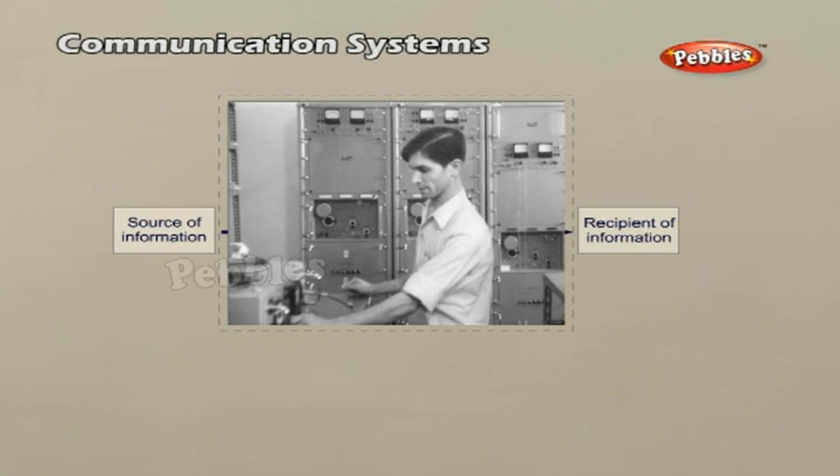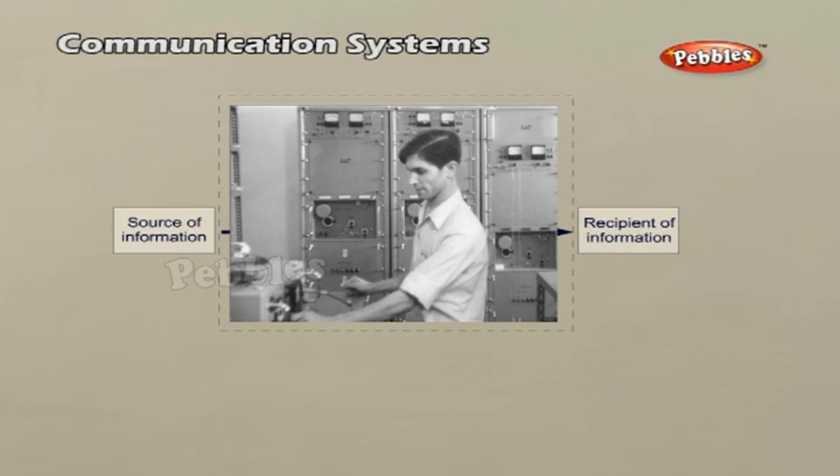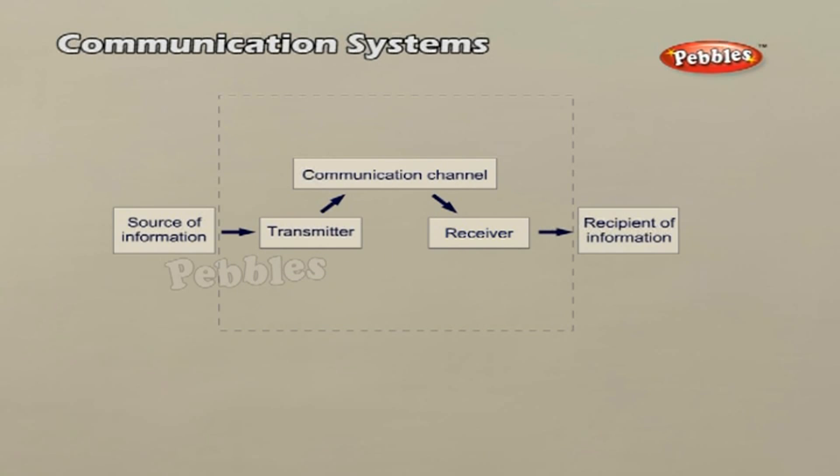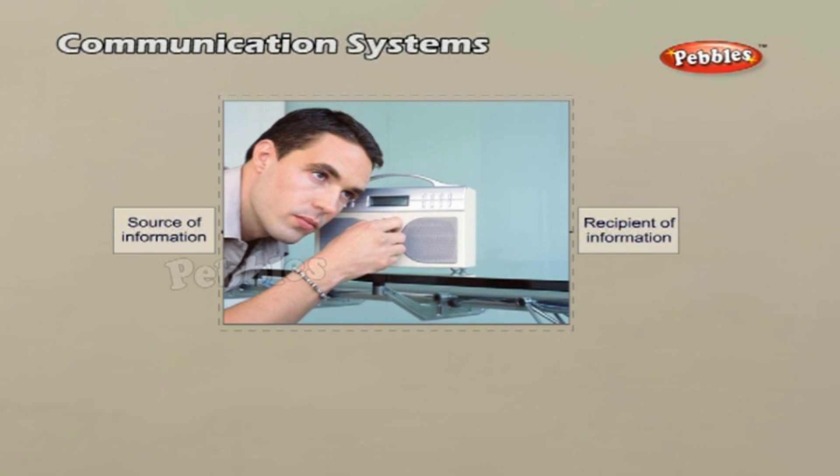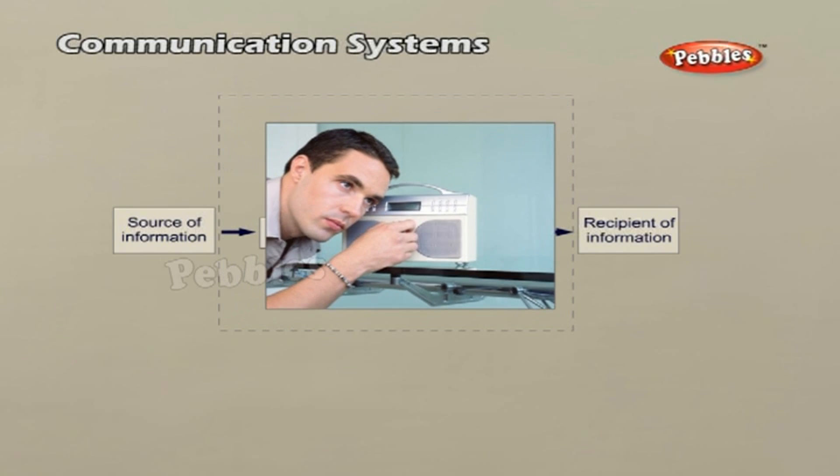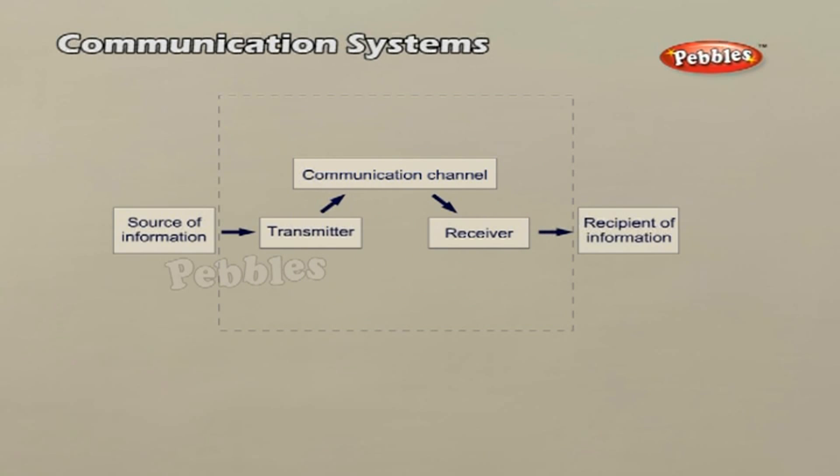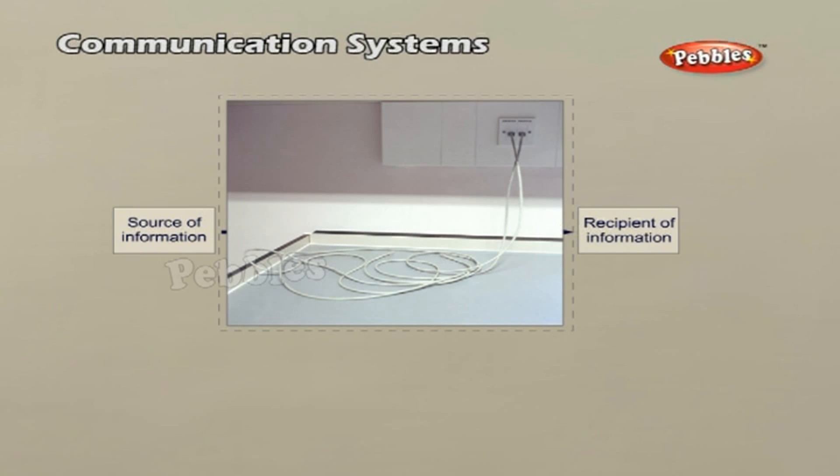The purpose of the transmitter is to convert the message signal produced by the source of information into a form suitable for transmission through the channel. The receiver has the task of operating on the received signal and reconstructs a recognizable form of the original message signal for delivering it to the user. There are two basic modes of communication: point to point and broadcast.